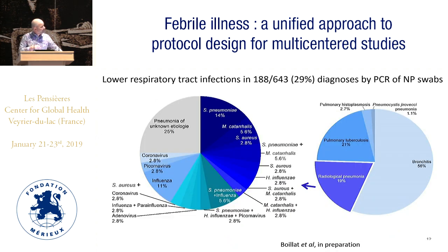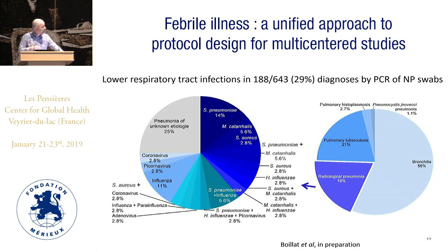If you include respiratory infections, you find a lot — and that is part of the fever. We took radiological pneumonia as an example. Looking at nasopharyngeal swabs by PCR, you see a lot of Streptococcal pneumonia — nothing new — some Haemophilus influenzae, Staph aureus, and viruses also. You get a better overall picture if you include them all.